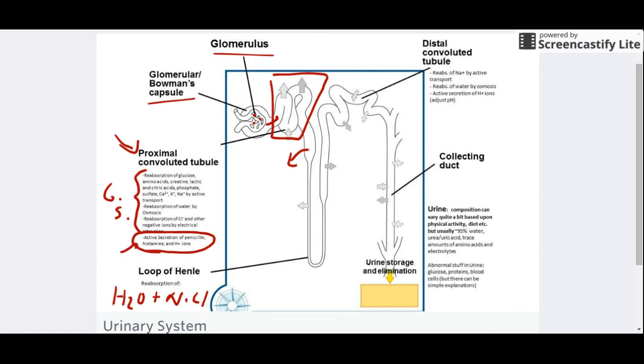After the loop of Henle you've got the distal convoluted tubule. Here we reabsorb some more water, some more salt, but the biggest thing is this last little box here.